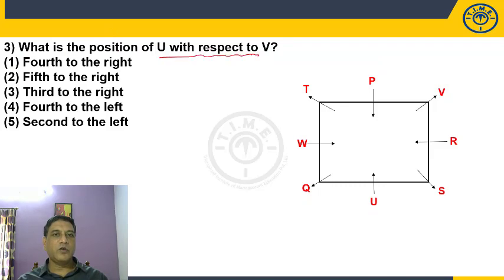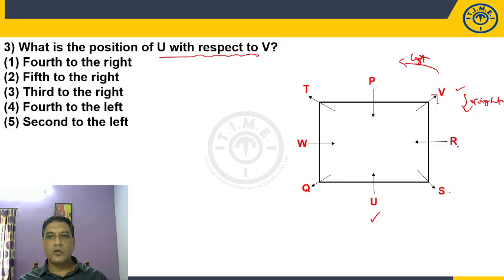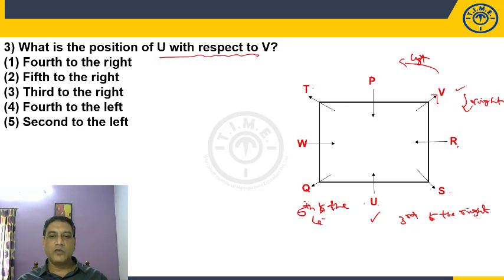Question 3: What is the position of U with respect to V? U is here and V is here. V is facing away from the center, so anticlockwise is left and clockwise is right. Counting from the right side of V: 1, 2, 3 — third to the right. Counting from the left side of V: 1, 2, 3, 4, 5 — fifth to the left. We choose whichever is given in the answer choices. Third to the right is the correct answer.